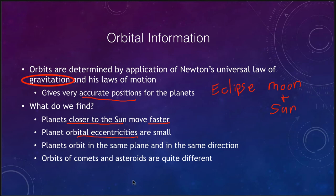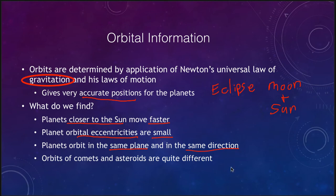Orbital eccentricities — which tell you how squashed the orbits are — are small for the planets. The planets have almost circular orbits, which is why we used circular orbits for thousands of years; there was not an obvious difference. The planets also orbit in the same plane, meaning you can almost draw them on a flat piece of paper. And they all orbit in the same direction — we don't have some planets going clockwise and some counterclockwise. These three properties apply specifically to the planets.